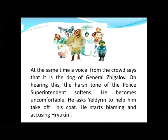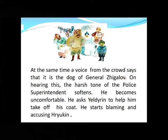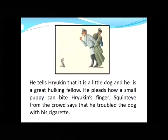At the same time a voice from the crowd says that it is the dog of General Zigalov. On hearing this, the harsh tone of the police superintendent softens — that's why we call him a chameleon. He becomes uncomfortable, asks Yeldrin to help him take off his coat, and starts blaming and accusing Ryokin. He tells Ryokin that it is a little dog and he is a great hulking fellow, pleading that a small puppy cannot bite Ryokin's finger. Someone from the crowd says he troubled the dog with his cigarette.